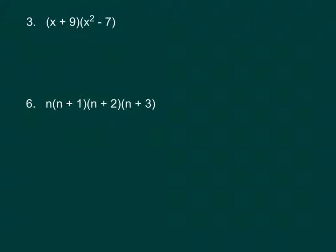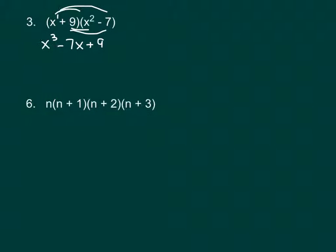In number 3 we're going to multiply a binomial — bi means 2 — so 2 terms by another binomial: 2 terms times 2 terms. You just double distribute. First take the x and distribute it to both terms in the second parentheses: x times x squared is x cubed (adding exponents: 1 plus 2 gives 3), and x times negative 7 is negative 7x. Then distribute the 9: 9 times x squared is positive 9x squared, and 9 times negative 7 is negative 63. To write in standard form, rearrange so exponents go in descending order: x cubed, then 9x squared, then negative 7x, then negative 63.